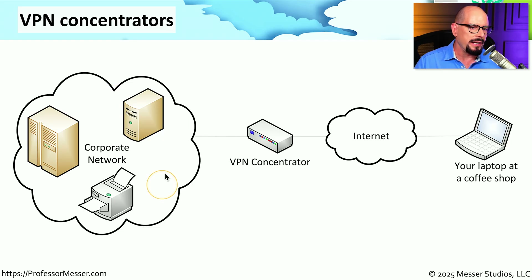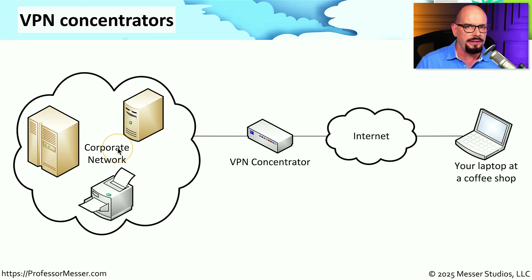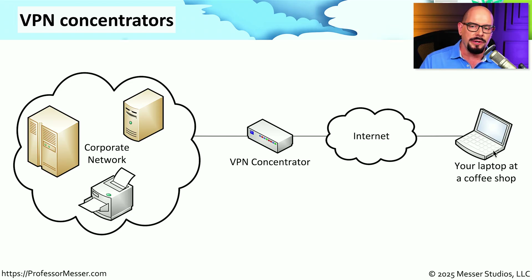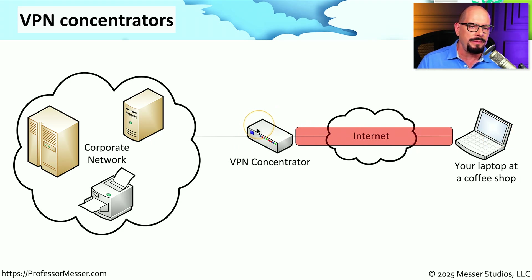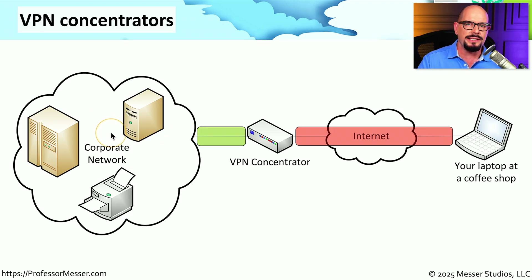For example, you might have a corporate network which has file servers, printers, and other resources, and you might be at a coffee shop. The network inside of your corporate network is very secure, but the network at the coffee shop is effectively wide open for everybody. To keep all of your data protected, we're going to encrypt all of the communication sending back and forth to our laptop by configuring a VPN client. That client software runs on our laptop, encrypting all communication going through the network and ending up at a VPN concentrator managed by your corporate network. The concentrator takes all of that encrypted data, decrypts it, and sends it to the resources inside of your corporate network.